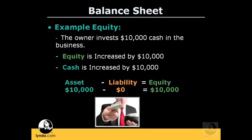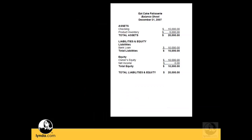Now that you know what assets, liabilities, and equity are, let's take a look at a simple balance sheet. At the top is listed the company name, the type of report, and the point in time being recorded. For this balance sheet, we are reporting on our company's net worth as of December 31, 2007.